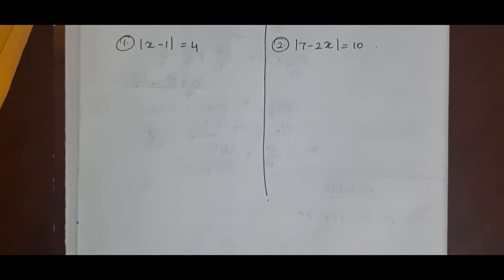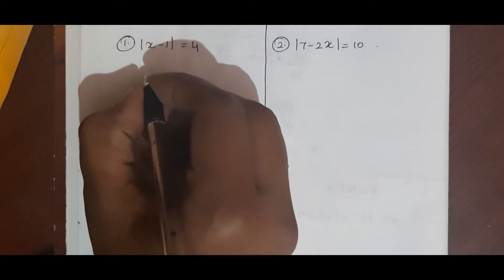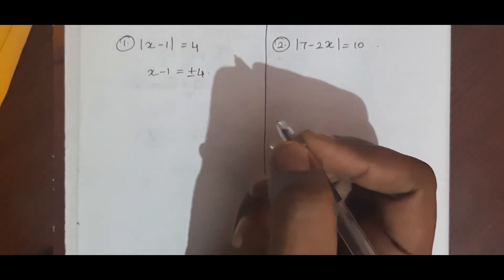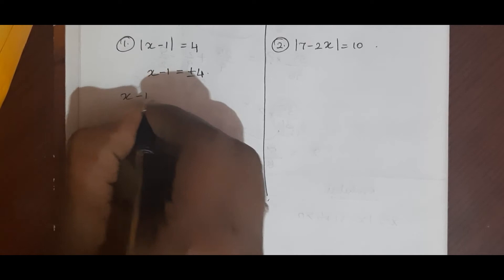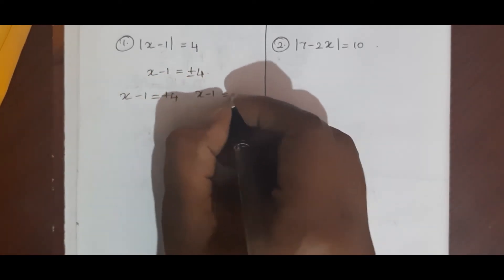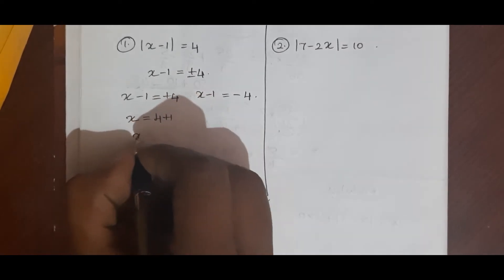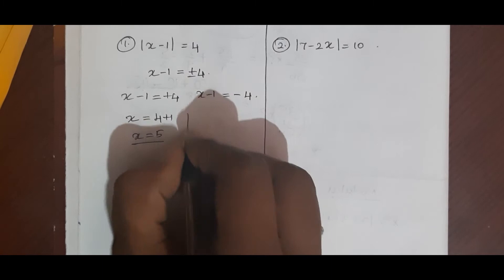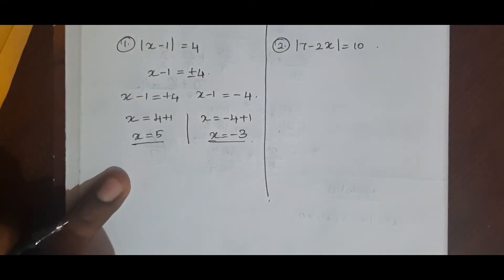If a problem in the examination comes like this, here is how we solve it. For modulus of x minus 1 equal to 4, we write x minus 1 equal to plus or minus 4. Then we split: x minus 1 equal to plus 4 gives x equal to 5, and x minus 1 equal to minus 4 gives x equal to minus 3. So we have two values: x equal to 5 and x equal to minus 3.